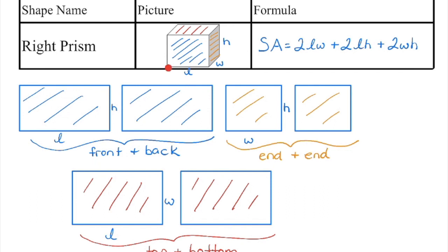If this is the length, this is the width, and this is the height — if I'm looking at my front and back faces, I'm going to take the length times the height to get the area of those two shapes. I'm going to take the width times the height to get the area of those two ends on the side. And I'm going to take the length times the width to get the rectangular area of the top as well as the bottom. Because there's two of each, I'll find the area of each rectangle and then double it.